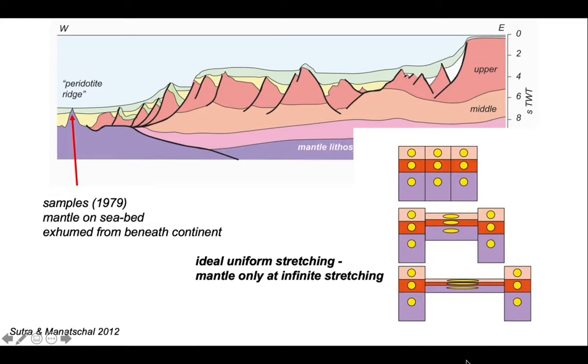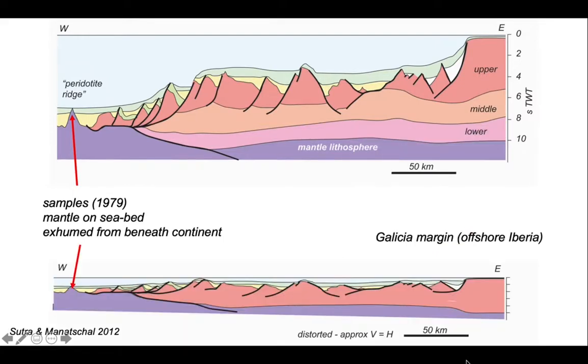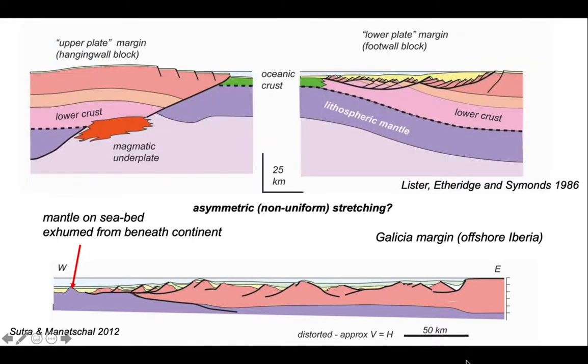So the Peridotite Ridge challenges the notion that uniform stretching might be applicable to continental margins. The cross-section we've got up there is slightly misleading because it's significantly vertically exaggerated. Let's draw it at approximately vertical equals horizontal scales. That's a better representation of how crust varies in thickness as we go from Spain into the deeper part of the Atlantic. Perhaps a better explanation of this margin, rather than uniform stretching model, is to apply the Lister et al model of asymmetric non-uniform stretching. In this case, perhaps what we're looking at here is a lower plate margin where the crust has thinned a lot beneath the detachments and ripped away the upper crust and moved it eventually now to the other side of the Atlantic.